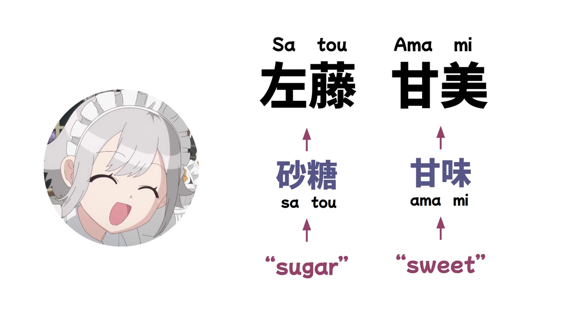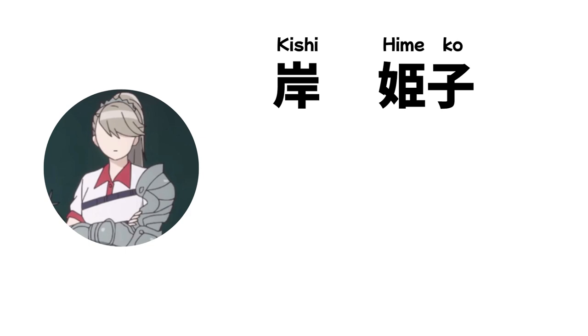The next character never gets any lines, but her name is Kishi Himeko. 'Kishi' means 'knight' and 'Hime' means 'princess,' and Himeko is never seen without her armor and tiara.